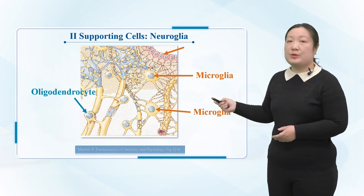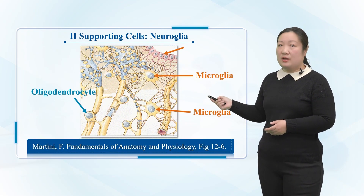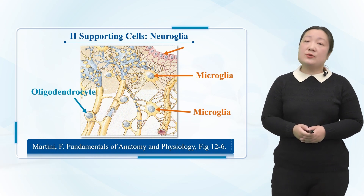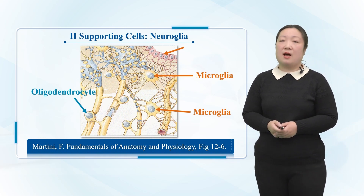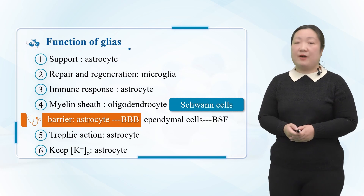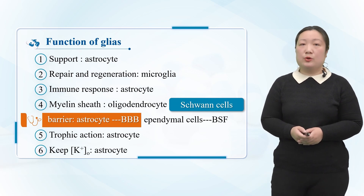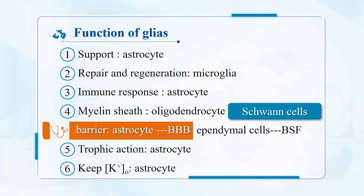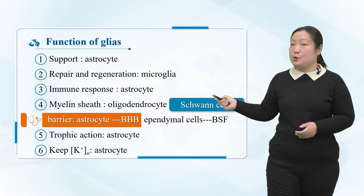Now we will teach you some knowledge about the function of glial cells. Glial cell functions include: first, the supporting function; second, the repairing and regenerating function — neurons generally have no regeneration capability, but glial cells can be regenerated; third, the immune response function; and fourth, material metabolism and nutrition function.